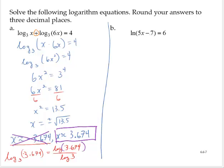Natural log of 5x minus 7 is equal to 6. Again, recall that the natural log is the same as the log base e of 5x minus 7. Rewriting this in exponential form, 5x minus 7 is equal to e to the sixth.